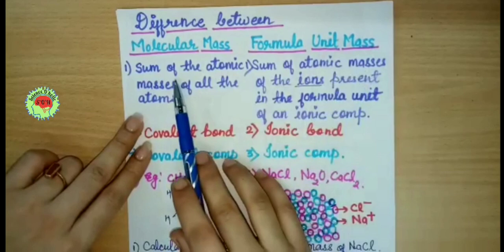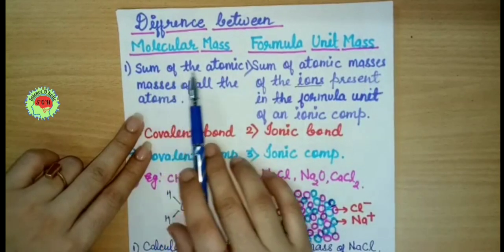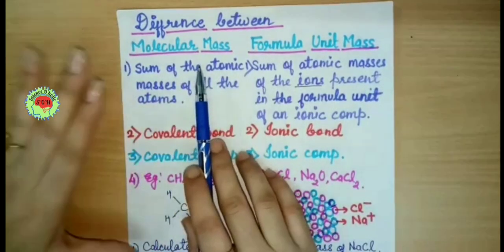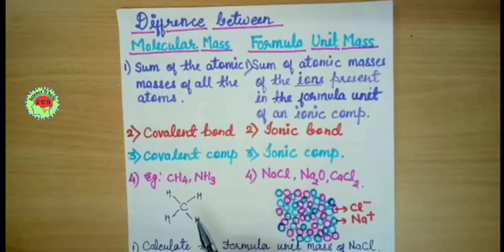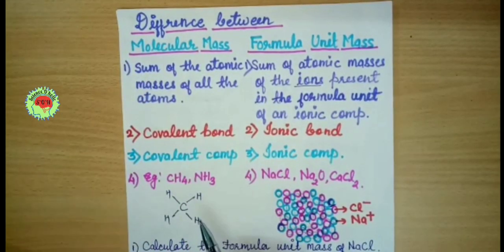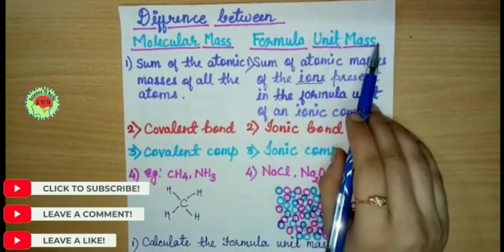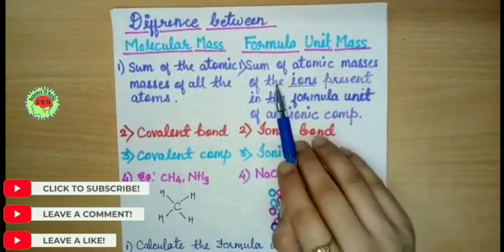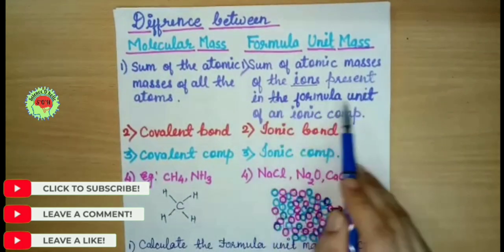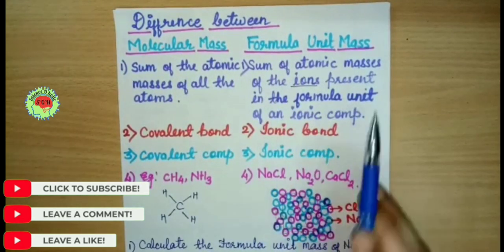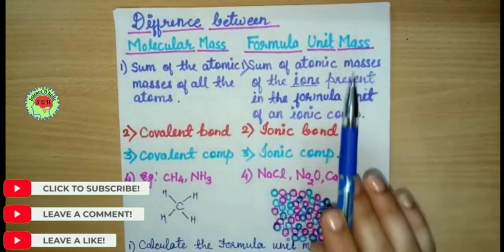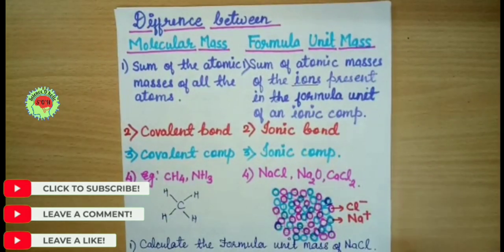The difference between molecular mass and formula unit mass. The first difference is: molecular mass is the sum of the atomic masses of all the atoms in each molecule. We calculate it by adding the atomic masses of all atoms present. But in formula unit mass, it's the sum of the atomic masses of the ions present in the formula unit of any ionic compound. Formula unit mass is calculated for any ionic compound.